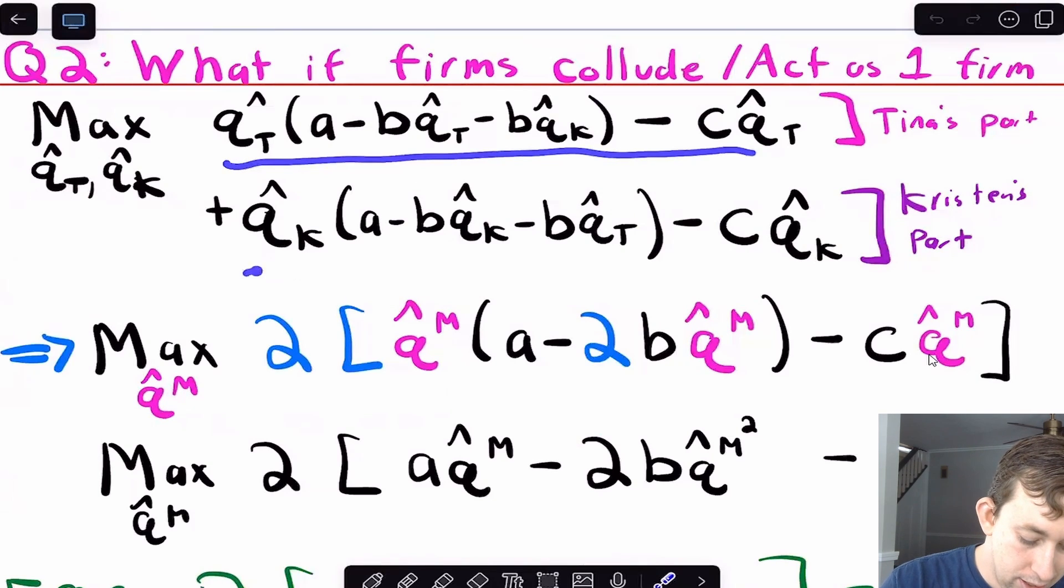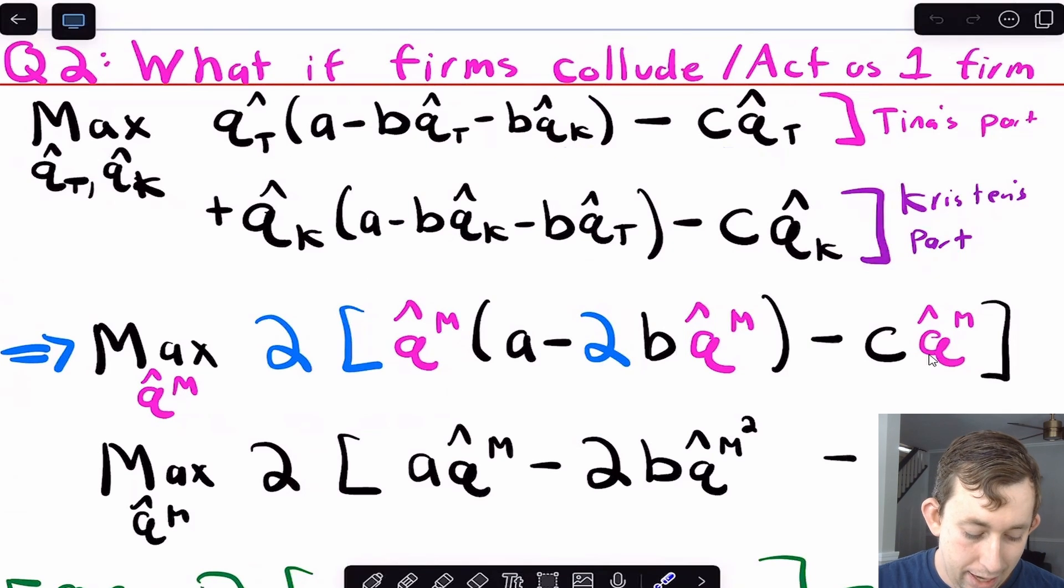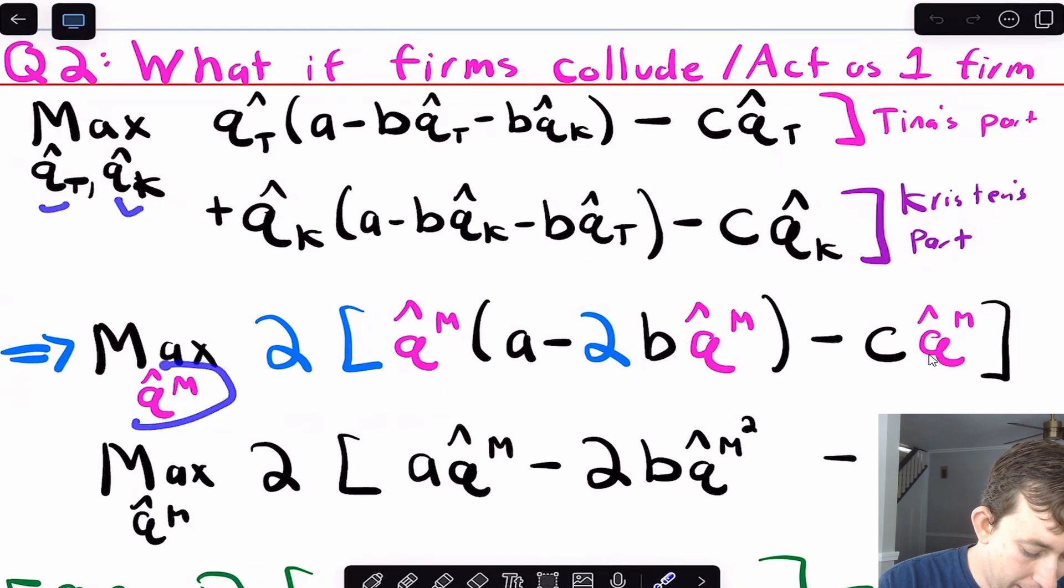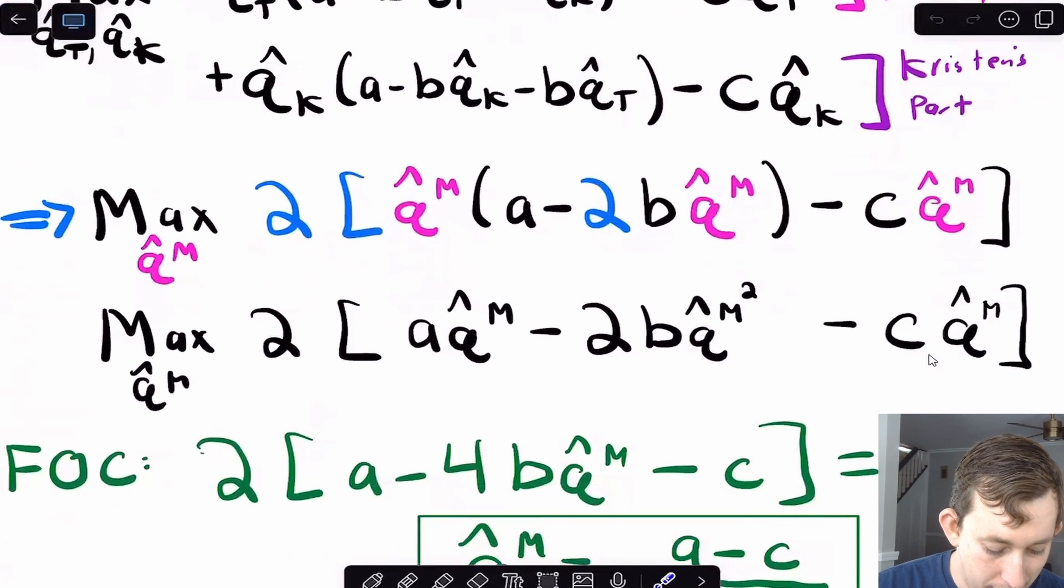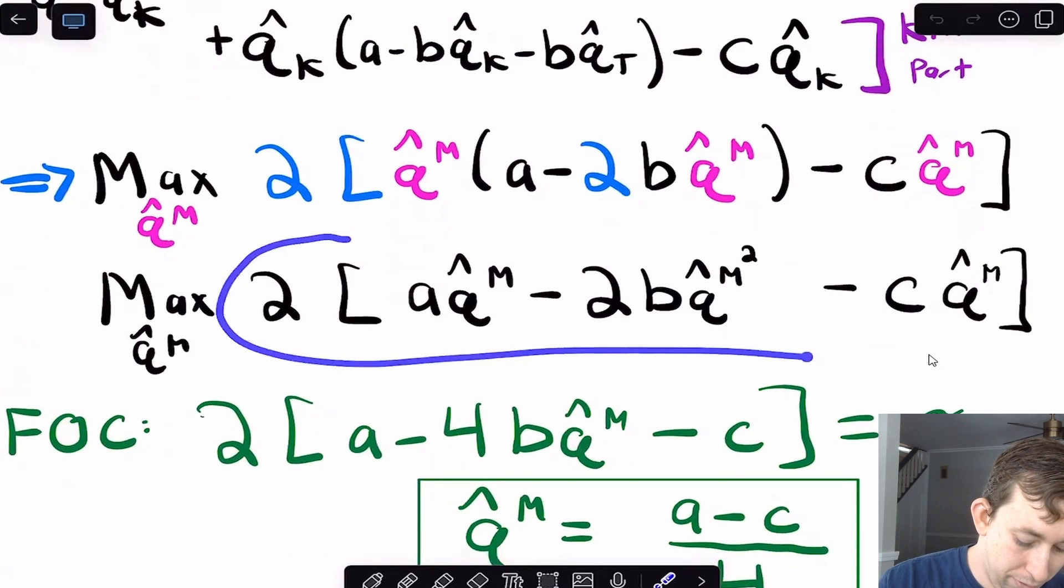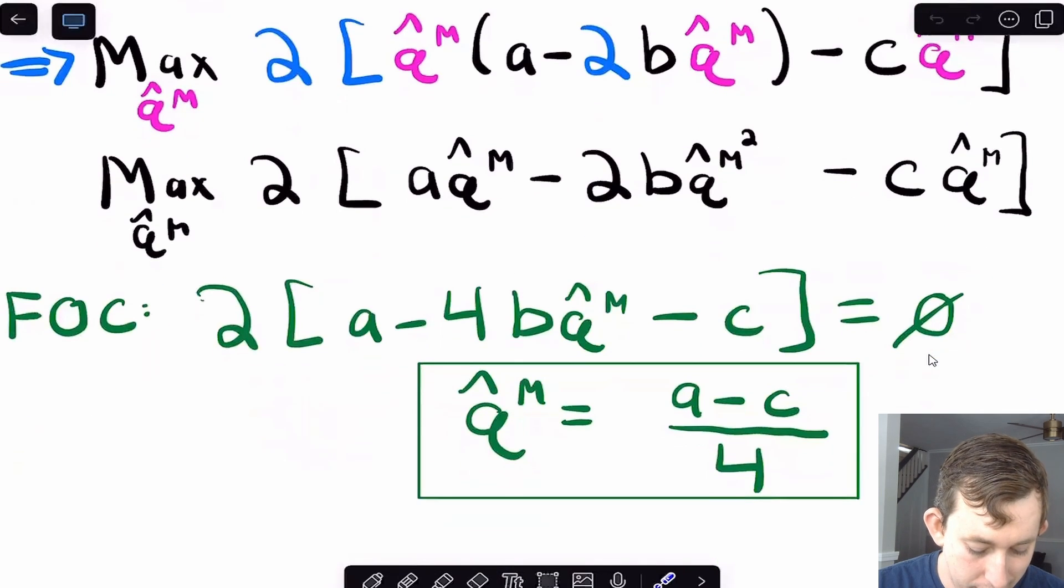So here we go. This is Tina's part right here. This is going to be Kristen's part right here. But now we're going to say that each of them should make the same amount. So we're going to go from qt hat and qk hat to q hat m or the optimal quantity as if they were a monopoly. The reason that's the case is if they are acting as a monopoly, they should choose the same quantity because they have the same cost and they face the same price. So it doesn't make sense for them to choose different quantities. So now I can just put it to you out here, this qk or qt is going to become a qm. Same thing here, same thing here. And now I am ready to maximize or take the first order condition of this objective function. And that's going to tell me what qm is. So I'm just going to take the first order condition. I'm going to get the q hat m is a minus c over four b.